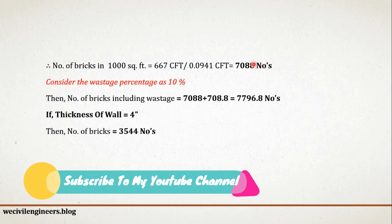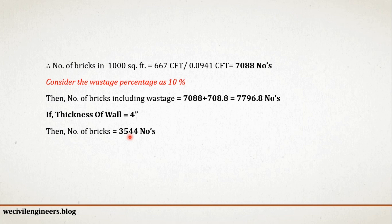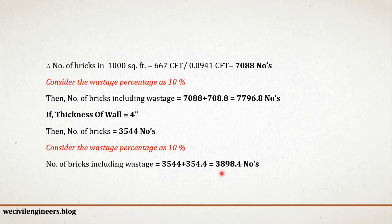If you divide 7088 by 2, then you will get the number of bricks for a 4 inch thick wall, which is equal to 3544 numbers. Considering the wastage percentage as 10%, the number of bricks including wastage equals 3898.4.